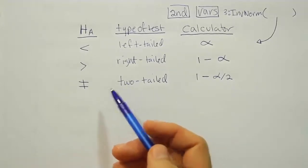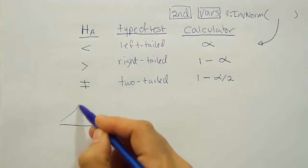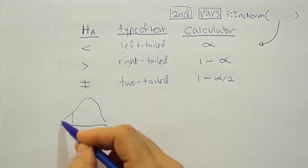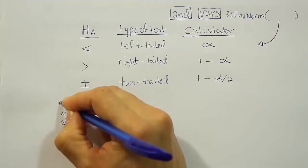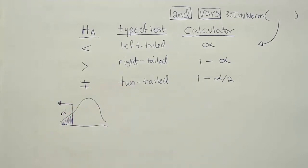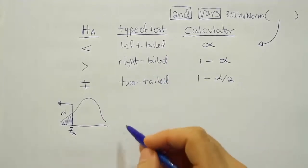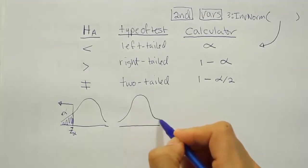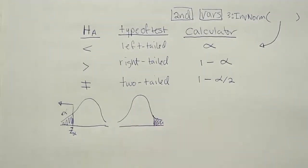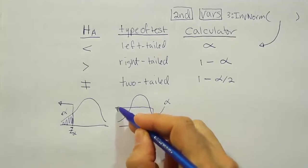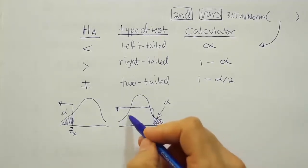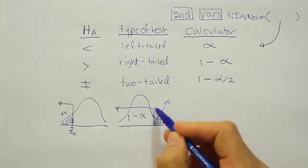To see why this is true, consider the drawings. For the left-tailed test, alpha is in the left tail. What the calculator needs to know is how much area is from the critical value downward. The area below that line is alpha, so giving it alpha produces the correct critical z-alpha value for the left-tailed test.